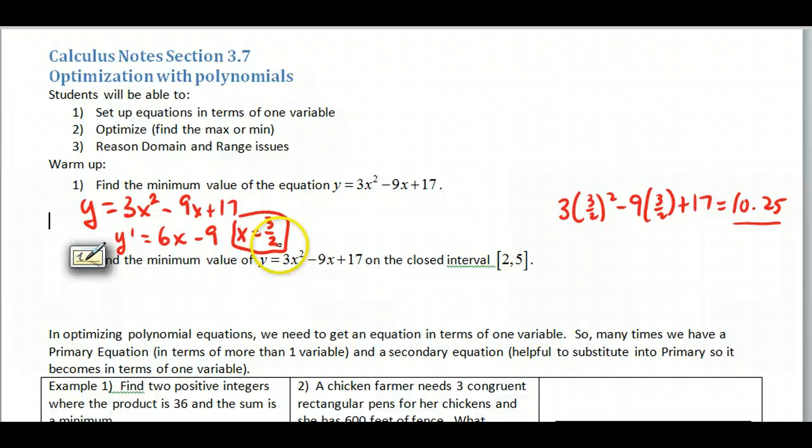You can also justify that this is a minimum value by checking the derivative. So I can take x, this would be 3 halves, and then I can do f prime of x, which in this case is y prime, and y prime to the left of 3 halves would be, for instance, plug in 0 that would give me a negative.